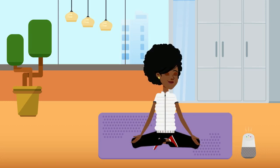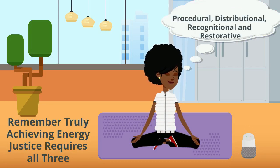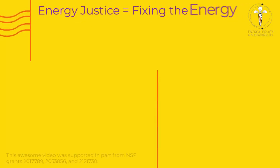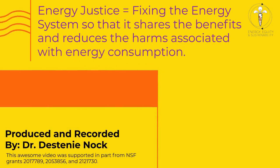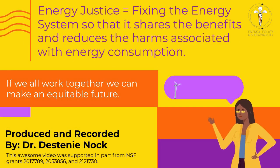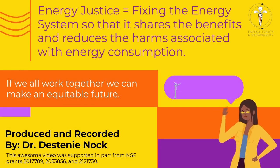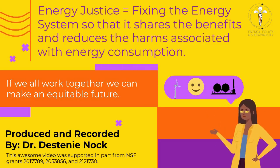Remember, truly achieving energy justice requires achieving all three types of justice — procedural, distributional, and recognitional and restorative justice. Energy justice requires that we are fixing the energy system so that it shares the benefits and reduces the harms associated with energy consumption. If we all work together, we can most definitely make an equitable future.